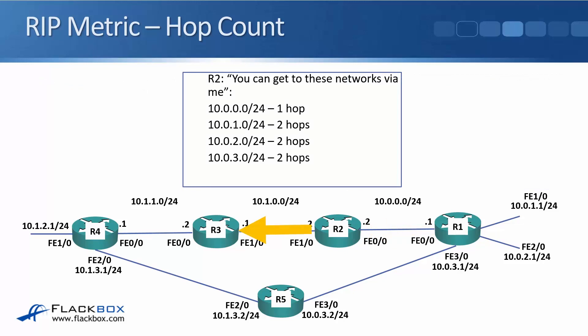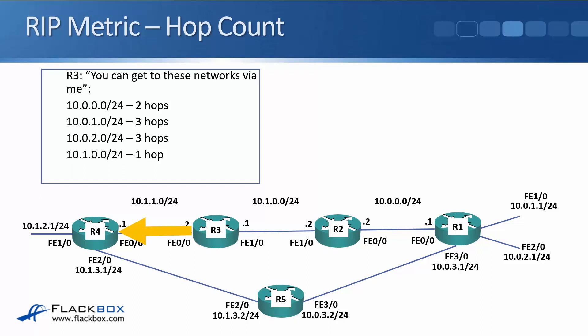R2 will get that information, update its routing table, and then pass the information on to R3, saying: hey R3, you can get to these networks via me — 10.0.0.0/24 is one hop because R2 is directly connected to it, and 10.0.1.0/24, 10.0.2.0/24, and 10.0.3.0/24 are two hops away. R3 will then pass the information on to R4, telling R4 it can get to 10.0.0.0/24 through R3 for two hops, and 10.0.1.0/24 and 10.0.2.0/24 are three hops away.